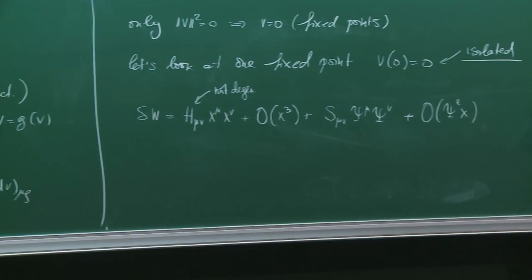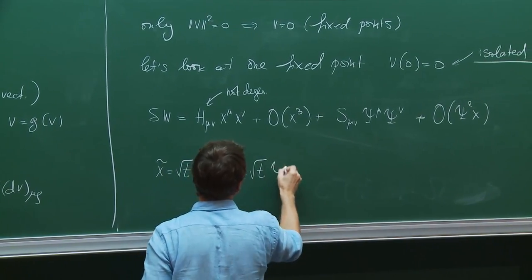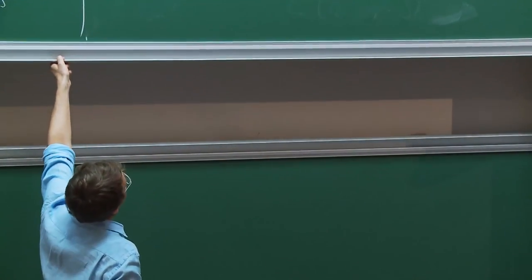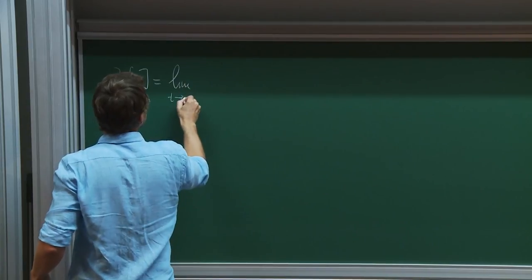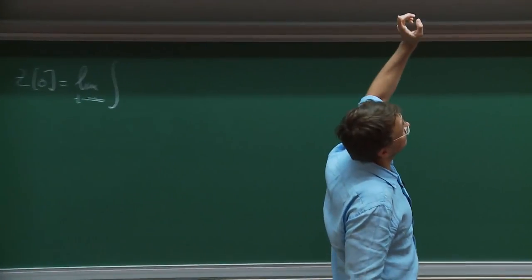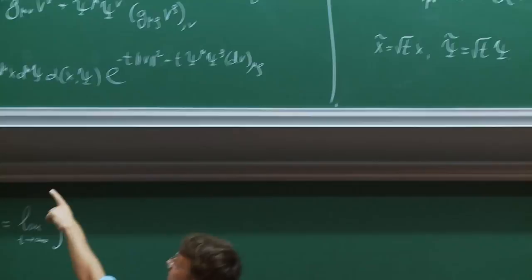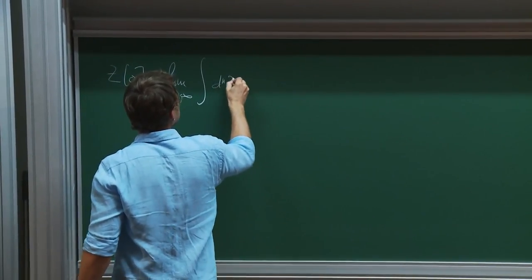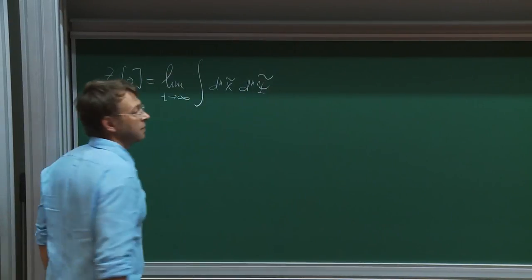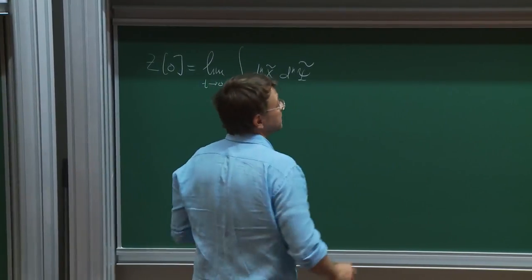I do the change of variables x̃ = √t x, ψ̃ = √t ψ. The crucial thing is that the measure transforms canonically — there is no Jacobian in the transformation for this supermanifold measure. So the measure becomes dⁿx̃ dⁿψ̃. When I rescale by t, the quadratic term stays, but the next cubic term becomes order 1/√t. Similarly for the fermionic term.